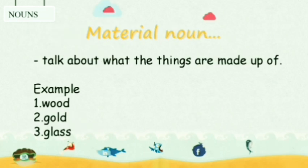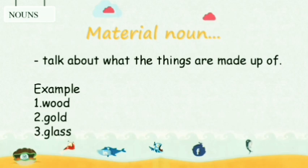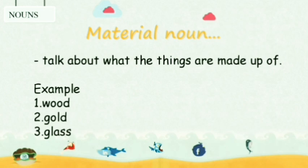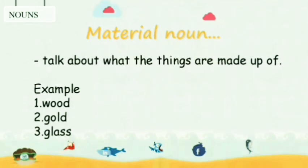And the last one is material noun. We use material nouns to talk about what things are made up of. Table is a noun — what is the table made up of? Either wood or plastic. So wood and plastic are called material nouns. You can see the second example: gold. By using gold, we can make lots and lots of things. And finally, glass — by using glass, we can make lots of things like plate, door, window. Many things can be made up of glass. So these kinds of raw materials used to make a particular object are called material nouns.